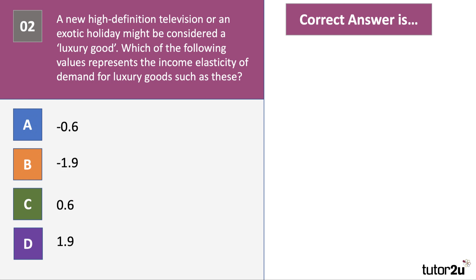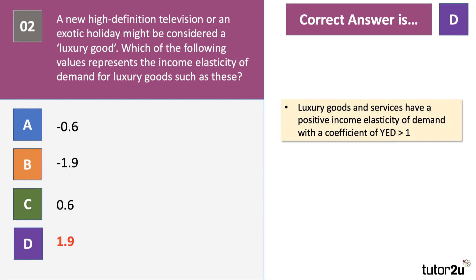Question 2: a new high-definition TV or an exotic holiday might be considered a luxury good. Which of the following values represents the income elasticity of demand for luxury goods? Income elasticity of demand covers inferior goods, normal necessities, and normal luxuries — where demand is highly sensitive to a change in income. The coefficient for luxury goods must be greater than plus 1, so the correct answer is 1.9. Options A and B would be inferior goods (negative coefficient), and C would be a normal necessity.